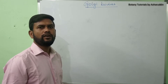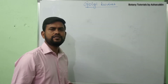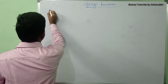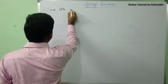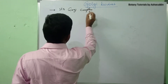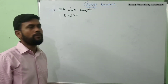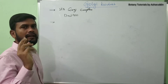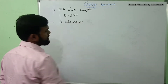In the previous part we discussed a brief introduction of Golgi bodies or Golgi complex. In this session I would like to explain the structure of Golgi complex. The structure of Golgi complex was explained by Dalton. He used an electron microscope and explained the structure of Golgi bodies. He observed mainly three types of elements.